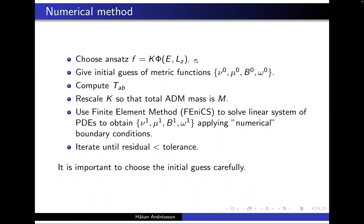The numerical method: you choose an ansatz with a constant k in front. Then you give an initial guess of your metric functions and compute your energy-momentum tensor. You then rescale k so that the total ADM mass is the value M you fix from the beginning — this rescaling is extremely important in order to make the method converge. Then we use the finite element method to solve the linear system of PDEs to update the metric coefficients, apply numerical boundary conditions, and iterate. It is important to choose the initial guess carefully. There are indications that the solutions obtained are dynamically stable — the algorithm seems only to converge to solutions that are dynamically stable.